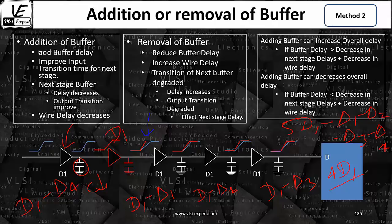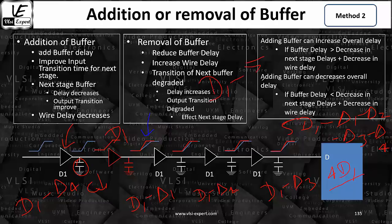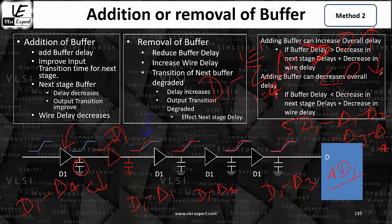Now it can happen that the summation of all deltas is greater than D1 — in that case the delay is going to reduce. If the reverse happens, meaning D1 is greater than the summation of all deltas, then your delay is going to increase. In equation form: D1 minus the summation from i equals 1 to 4 of delta i. If this is greater than zero, delay increases; if it is less than zero, delay decreases.